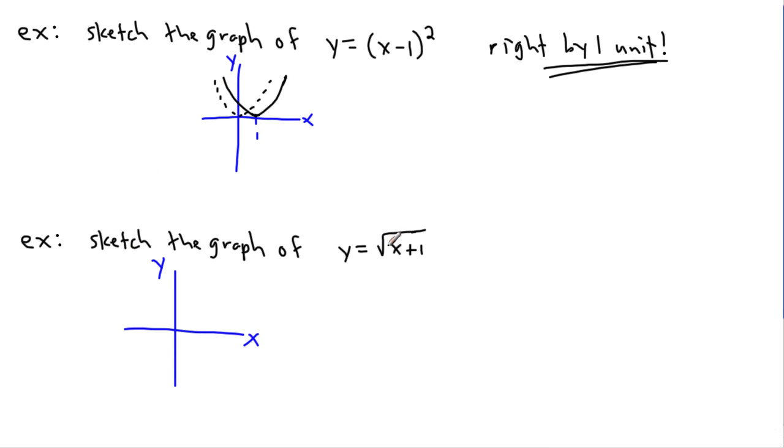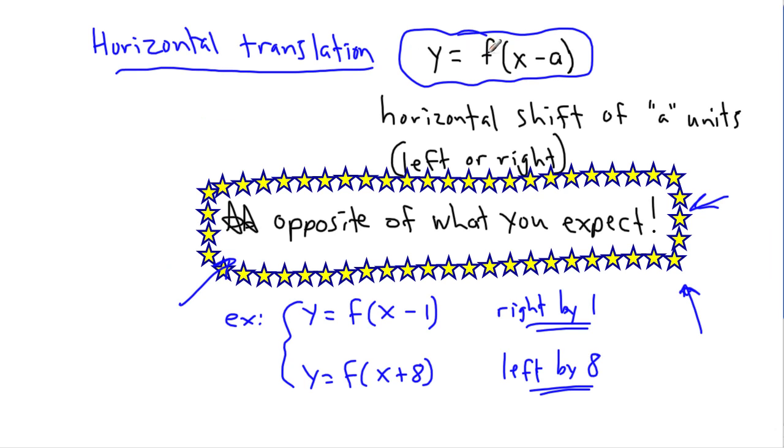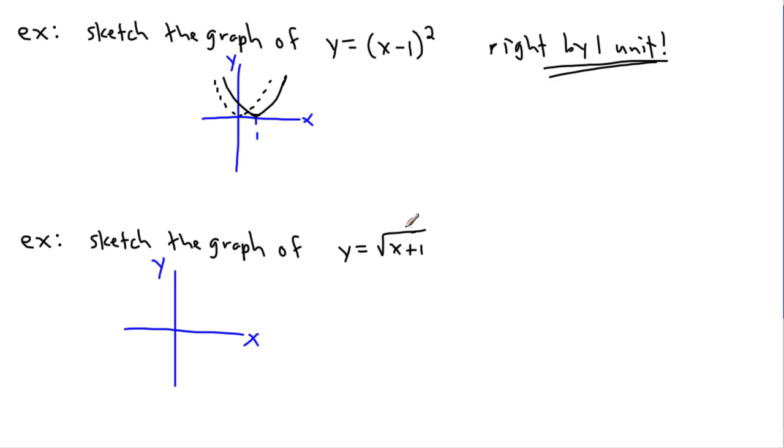What's the graph of square root of x plus 1? You have to look at this and say this is something within the square root. That's like within the bracket of f of x. This means you'd think plus 1 means to go right by 1, but it's left by 1 unit.